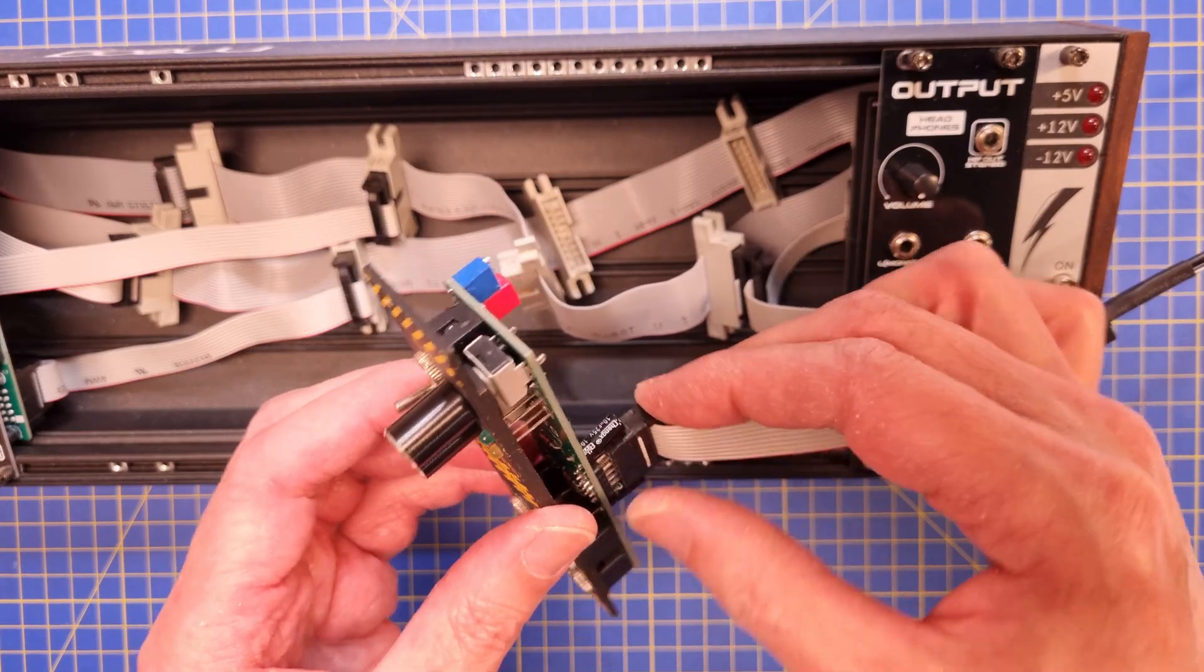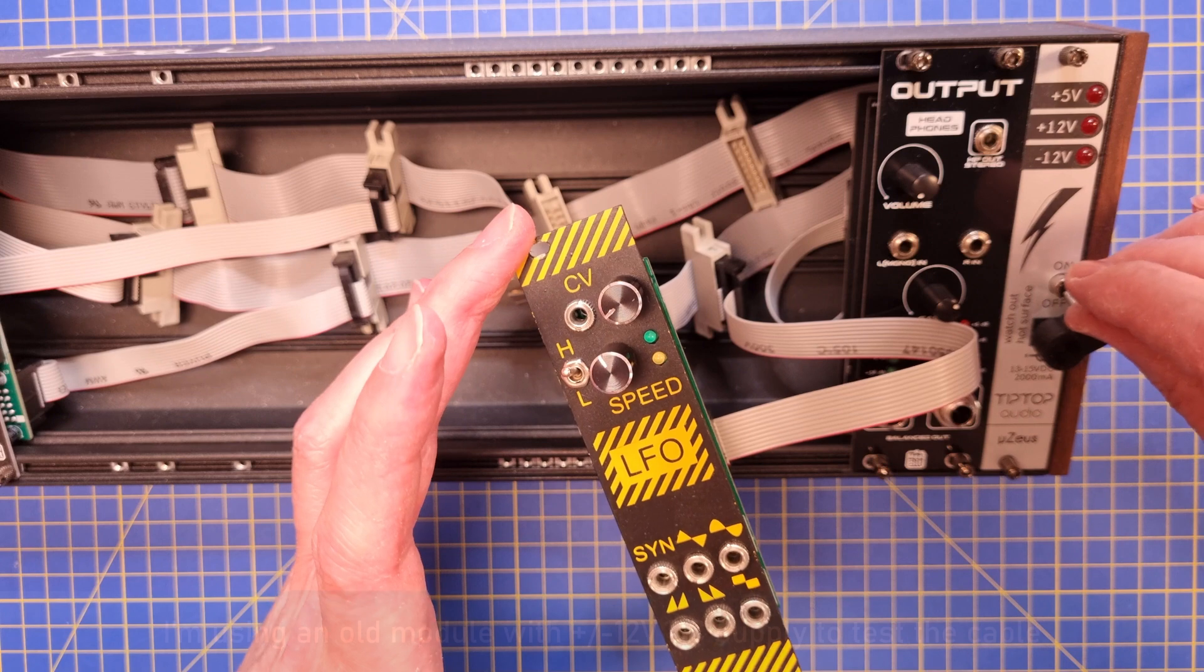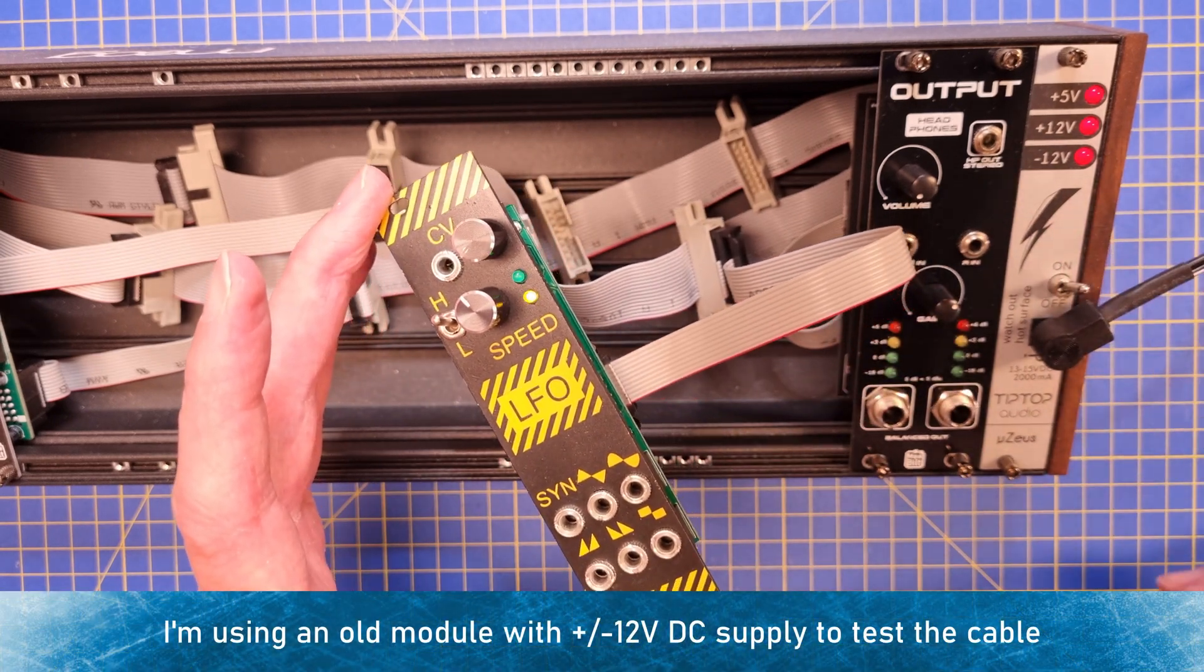Many module manufacturers place the power connector on the modules with pin 1 downwards so the red stripe should be facing down.